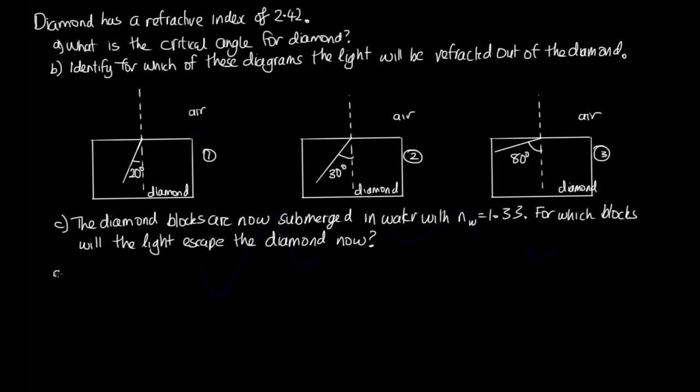Okay, so for part A, we just need to use our formula for critical angles, which tells us that 1 is equal to the refractive index times sine of the critical angle. So we can rearrange this for the critical angle. We've got that the critical angle is equal to the inverse sine of 1 on n. So this is equal to the inverse sine of 1 over 2.42. And solving that one on the calculator, we get that it's equal to 24.4 degrees.